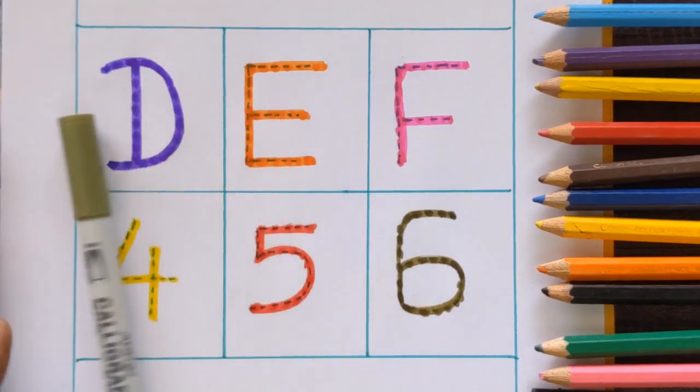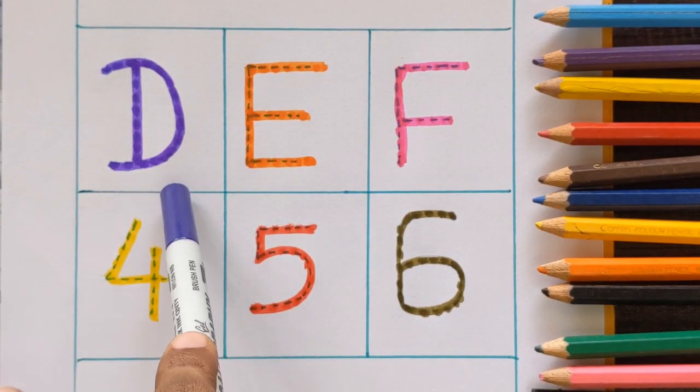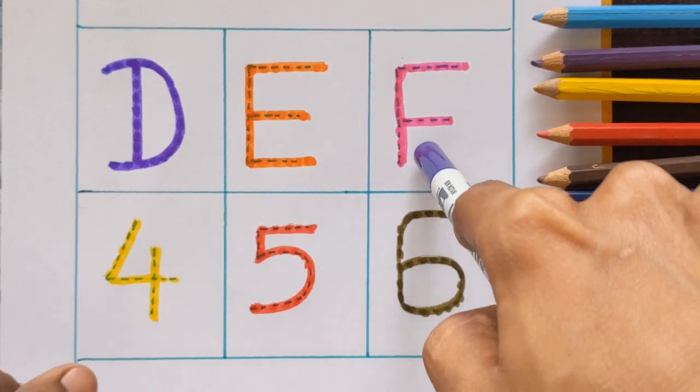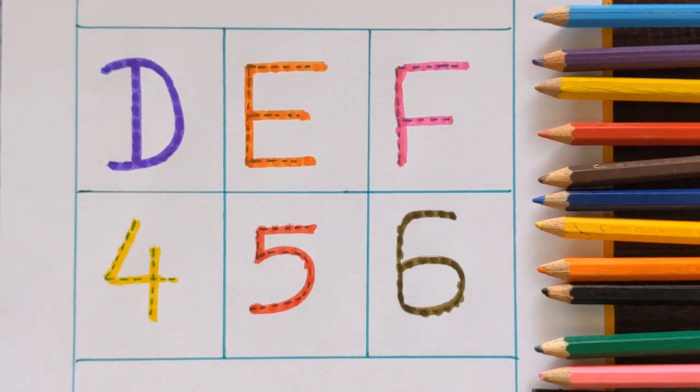Today we will learn D for dolphin, E for earth and F for fan. Okay, let's get started.